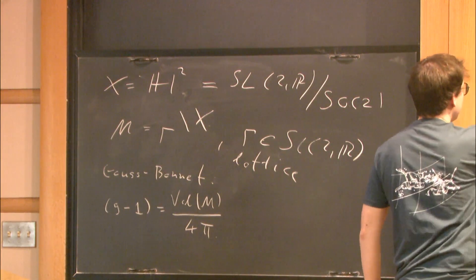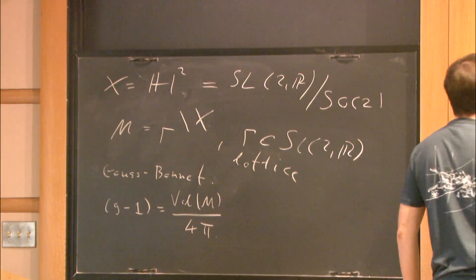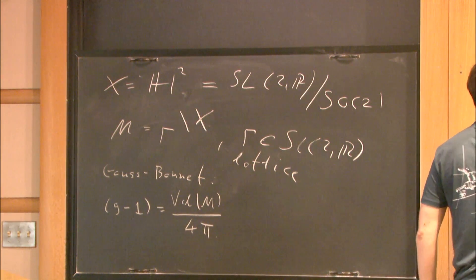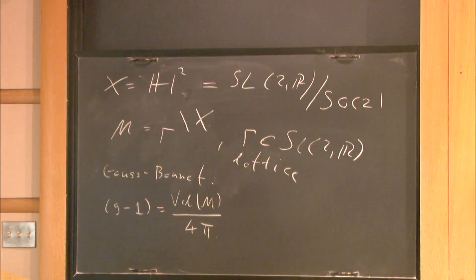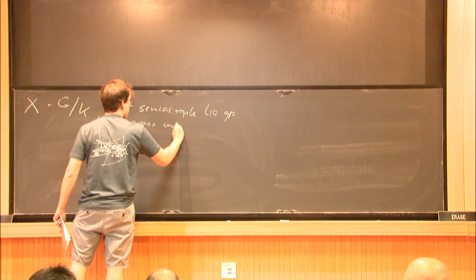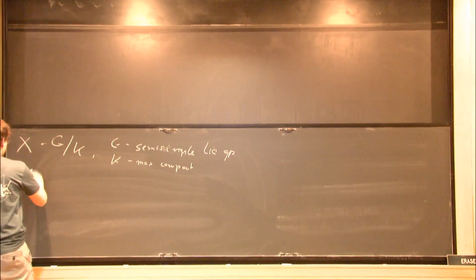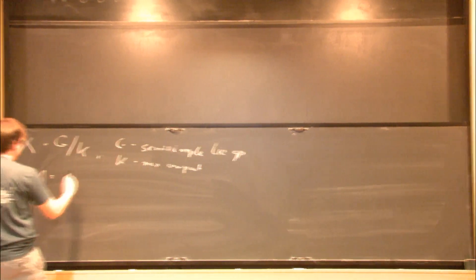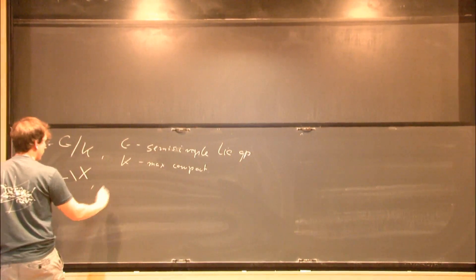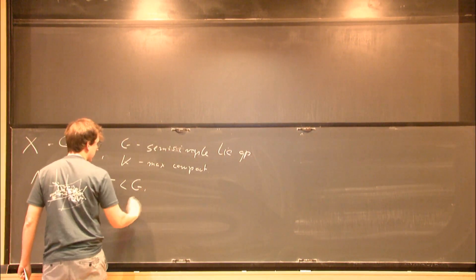Let's look at now some more general symmetric spaces. For me, it will be always G mod K, where G is a semi-simple Lie group and K is maximal compact. And we'll be looking again at manifolds or orbifolds of form X mod gamma, where gamma in G is a lattice.